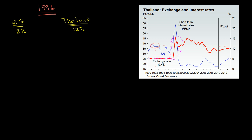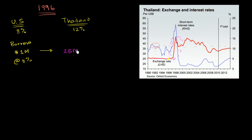So let's say it's 1996, you're a Thai financial institution, and you borrow one million dollars at 8%. In 1996 the exchange rate is 25 baht per dollar, so you convert that million dollars into 25 million baht. You then lend that 25 million baht at 12%.